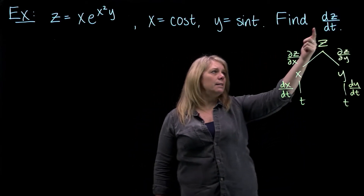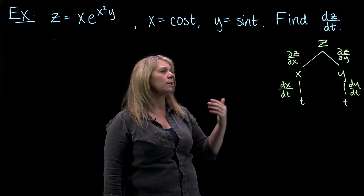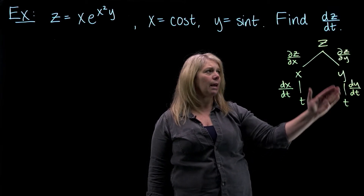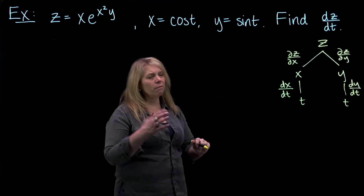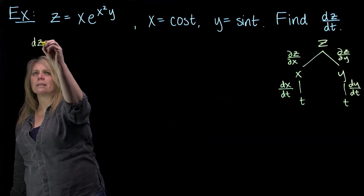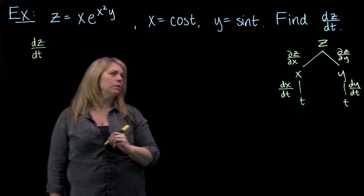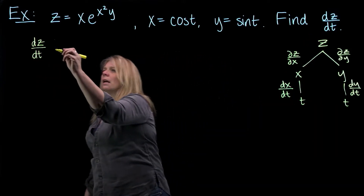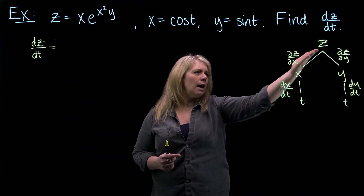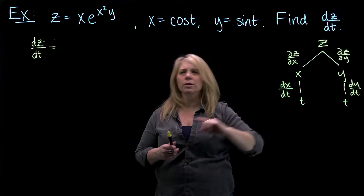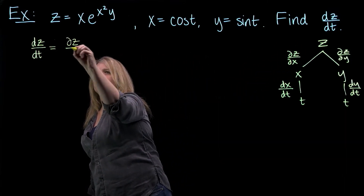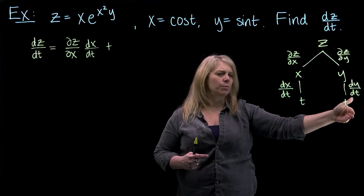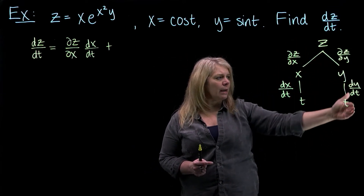We're asked to find dz/dt — notice I used ordinary d there, because when thinking about z in terms of this terminal variable t, there's only one variable, so that's an ordinary derivative. So I'm going to write down the chain rule, paying attention to the notation. The derivative of z with respect to t — only one terminal variable, so that's an ordinary derivative — equals del z/del x times dx/dt, multiplying down these branches, and then we add the contribution from each branch: plus del z/del y times dy/dt.